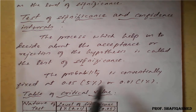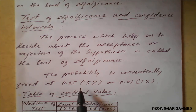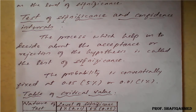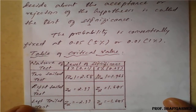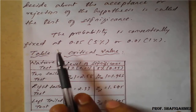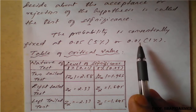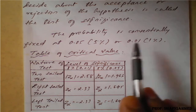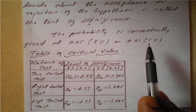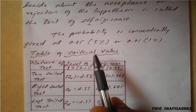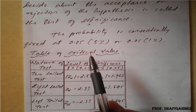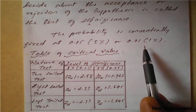The probability is conventionally fixed. We have two values from which we test the level of significance: if the value obtained from probability is less than the threshold, we accept; if it is greater, we reject. Those values are 0.05 (5 percent level of significance) and 0.01 (1 percent level of significance).